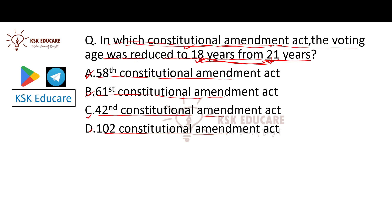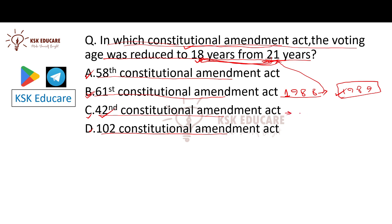The correct answer is Option B — the 61st Constitutional Amendment Act. It was the 61st Amendment Act of 1988 which reduced the voting age from 21 to 18 years. Also note that the 42nd Constitutional Amendment Act is known as the 'mini constitution.'